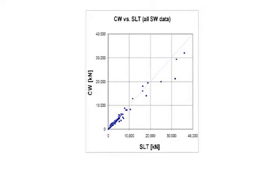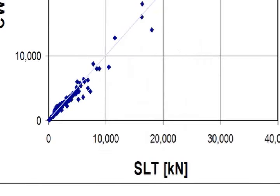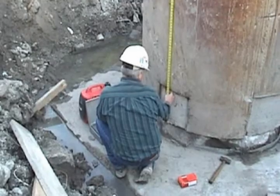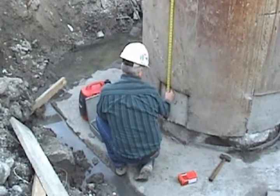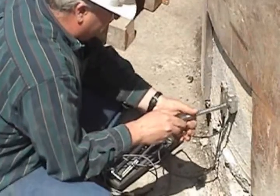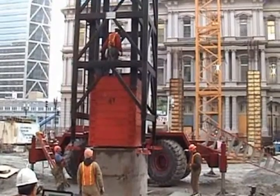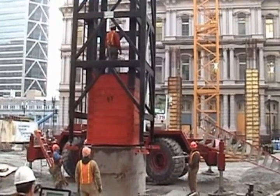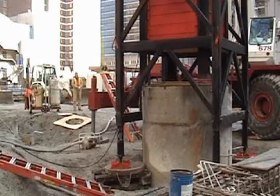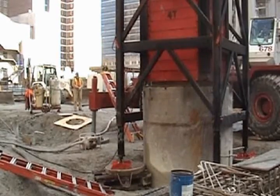A graph shows a good correlation between bearing capacities from high strain dynamic load tests and those from static load tests. Codes, standards, and manuals of practice all over the world require or encourage dynamic load tests and may allow them to partially replace static tests. High strain dynamic load tests have been used to mobilize test loads of up to 4,000 tons.